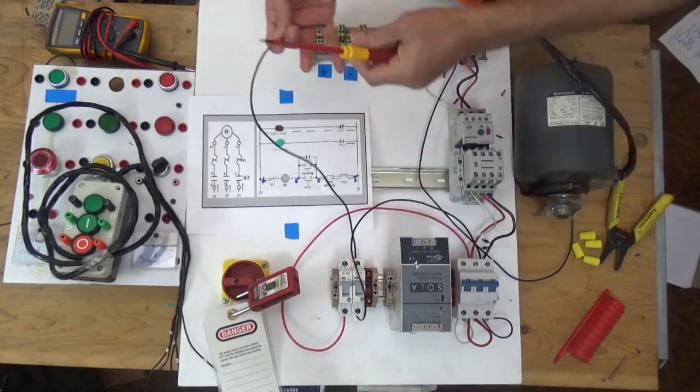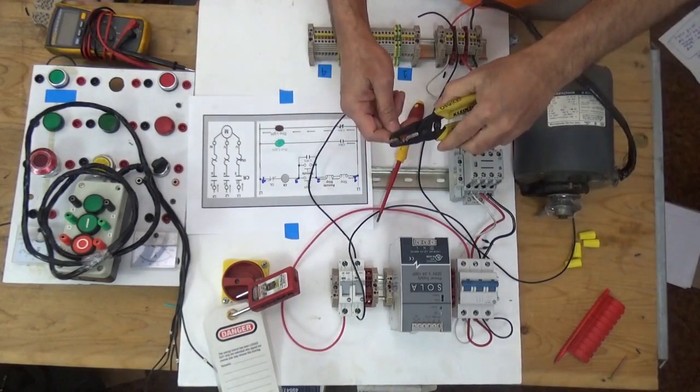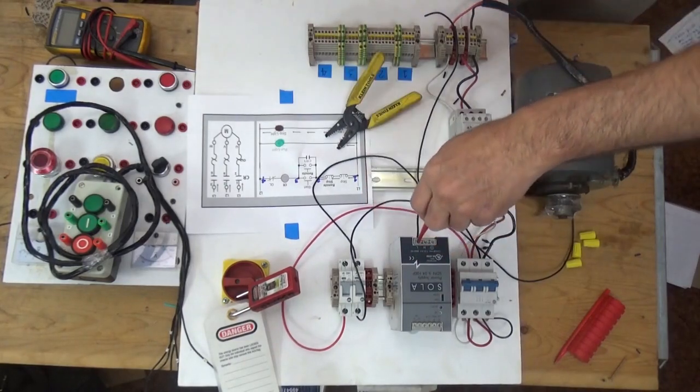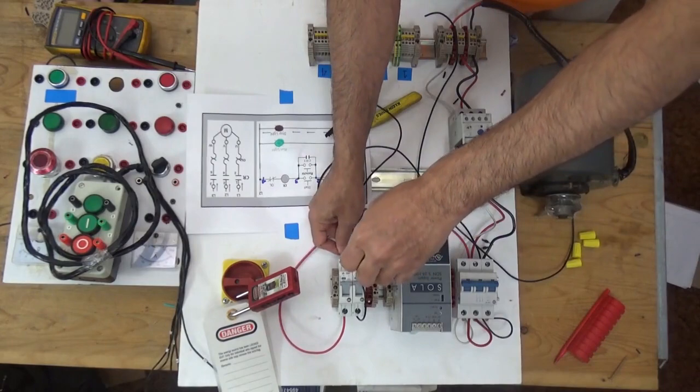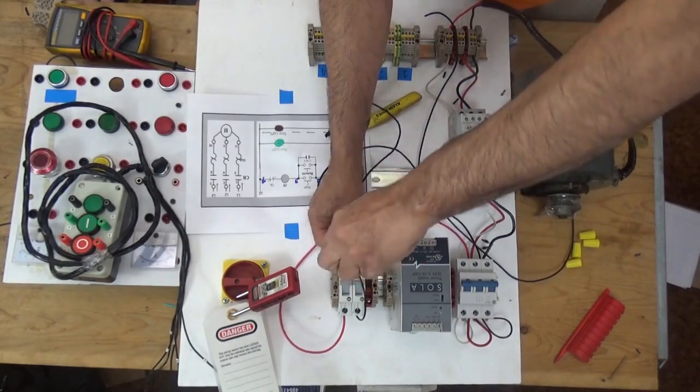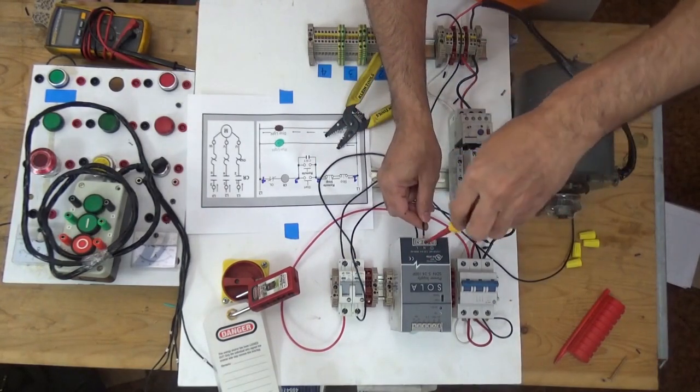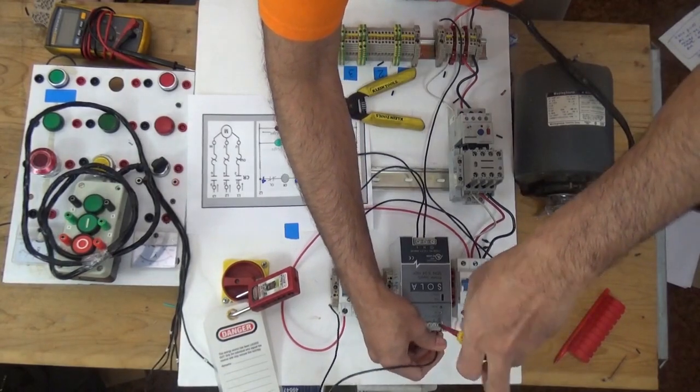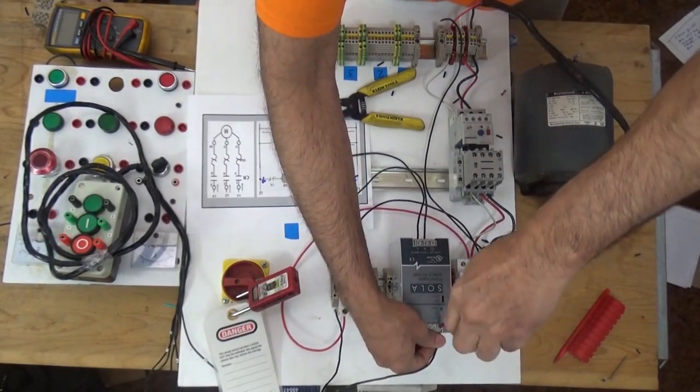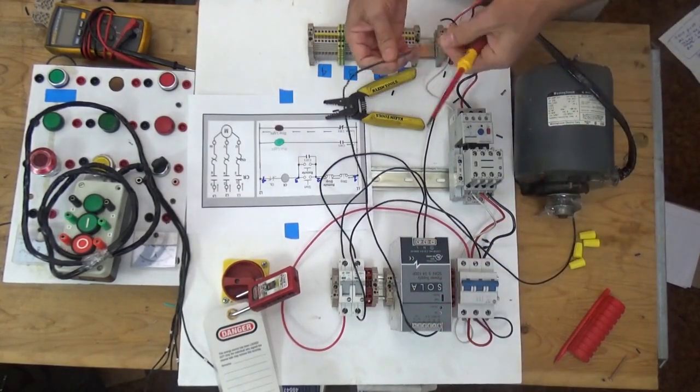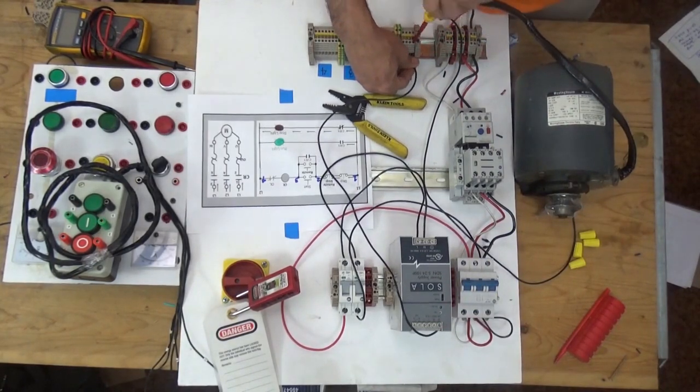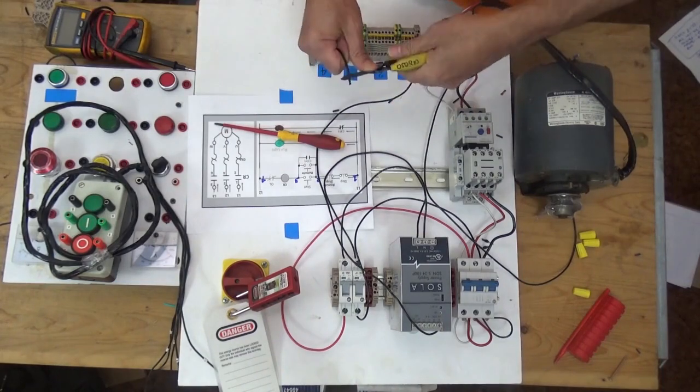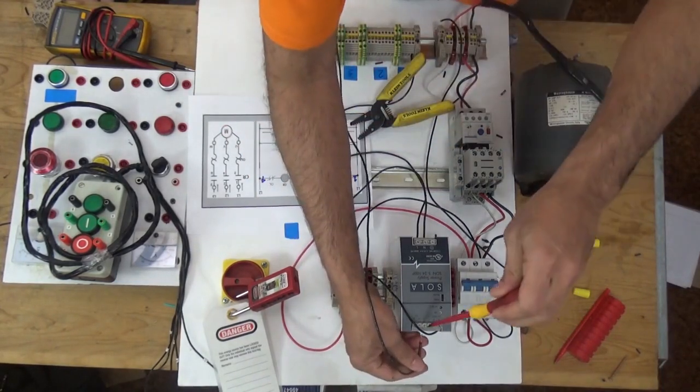Here, from our control circuit breaker going to our 24 volt power supply. From the positive terminal of our power supply going to line one. For the negative supply for our 24 volts.